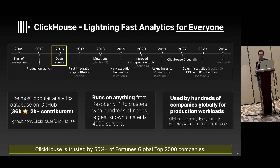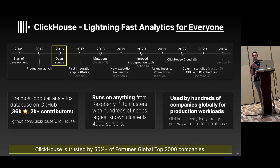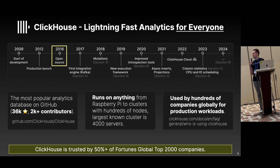In just eight years ClickHouse became one of the most popular open-source analytics databases, with over 36,000 stars on GitHub and more than 2,000 contributors. The database runs pretty much on everything, starting from your laptop or Raspberry Pi, up to powerful clusters with thousands of machines. ClickHouse is used by hundreds of companies such as Uber, eBay, Cisco, Netflix, and Disney to handle the most demanding workloads.